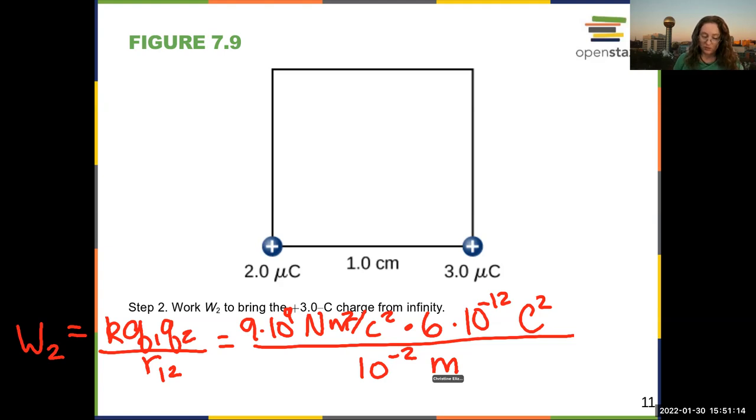All right. Now I'm going to count my powers. So if I count my powers, there's like 9 plus 9 minus 12 is minus 3 divided by minus 2 is minus 3 plus 2, is minus 1, so I have a 10 to the minus 1, and then I have 9 times 6.